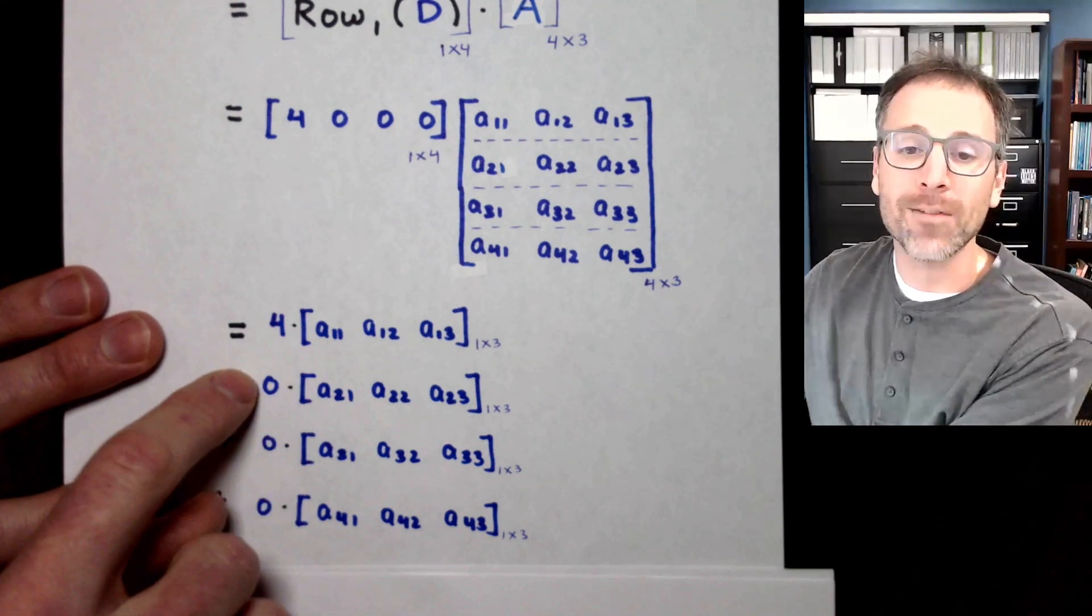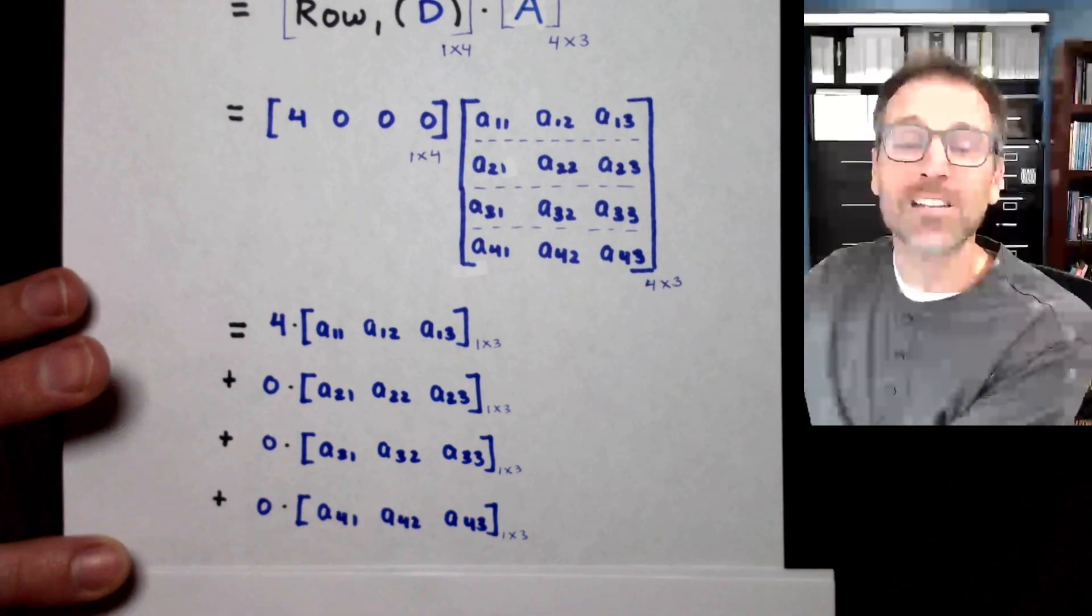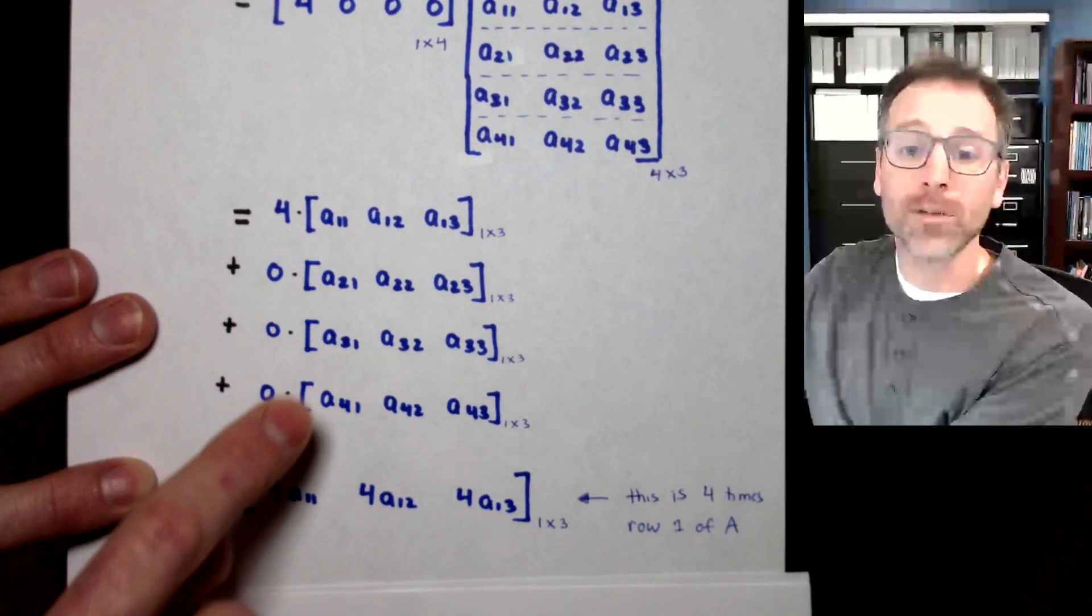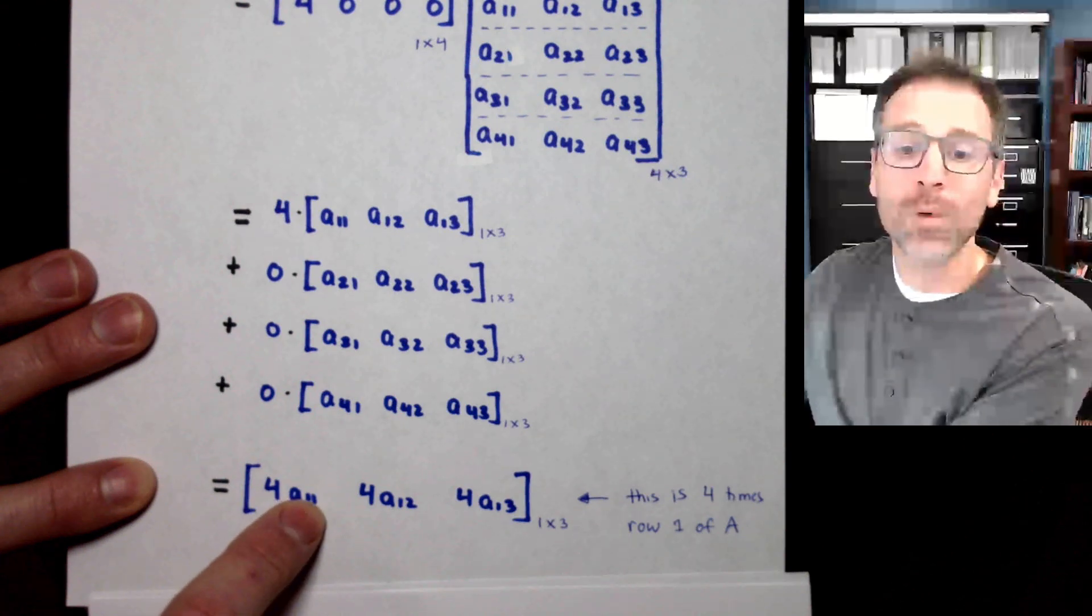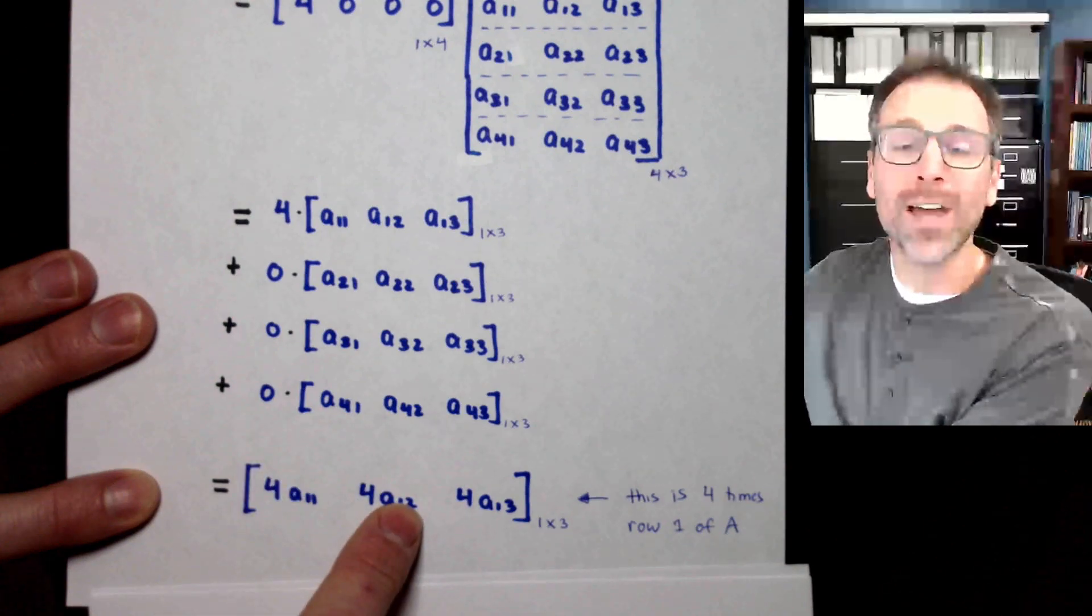Notice that 0 times any vector is the 0 vector, which when we add does nothing. So all of these cancel out and are annihilated. And I'm left with 4 times the first row, which is 4 times A11, 4 times A12, 4 times A13. This is 4 multiplied by row 1 of A.